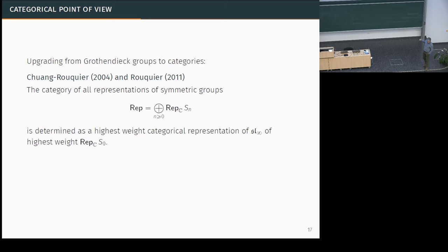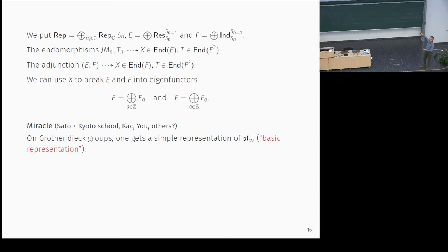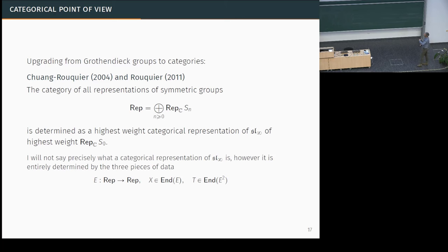Something truly remarkable is that you can do a categorical version of this — the theory of categorical representations of Lie algebras. There's a notion of a categorical representation of a Lie algebra: some category with symmetries such that on the Grothendieck group you have a representation of a Lie algebra. Before, we could produce a whole vector space just knowing the highest weight. Here, we can spit out this whole category just knowing a one-dimensional vector space. This categorical representation is a category with an endofunctor and an endomorphism of a square satisfying some conditions — really not that scary.